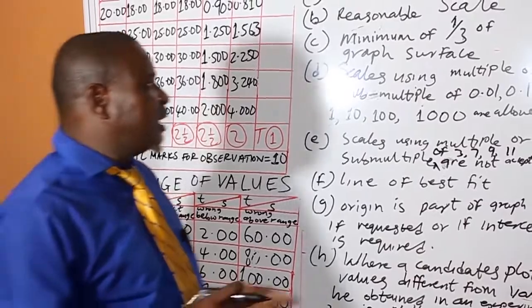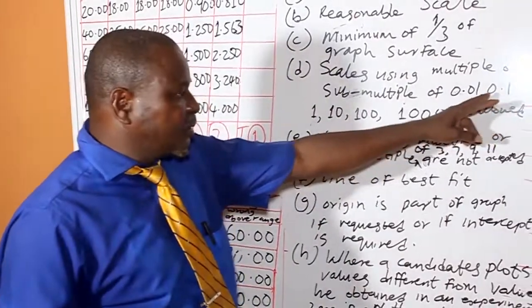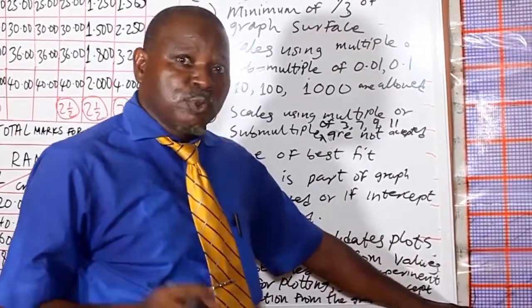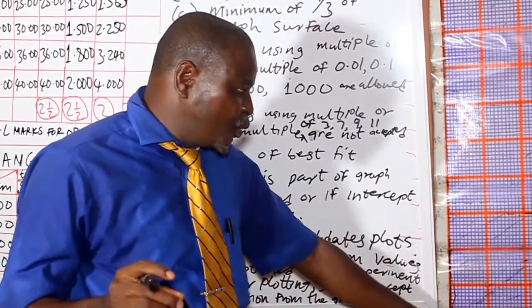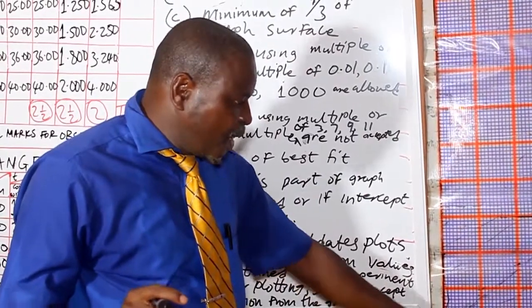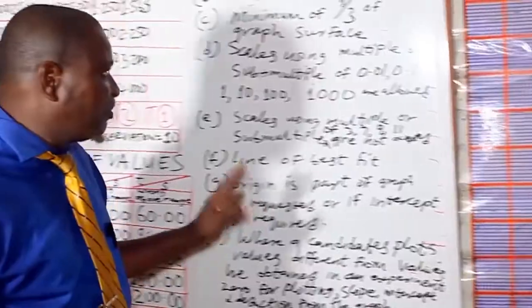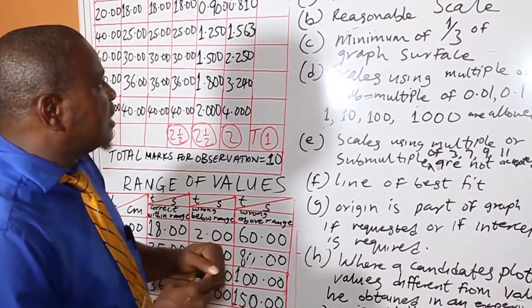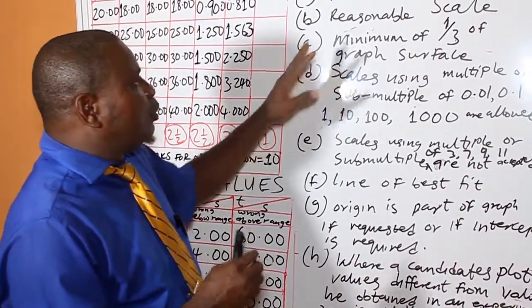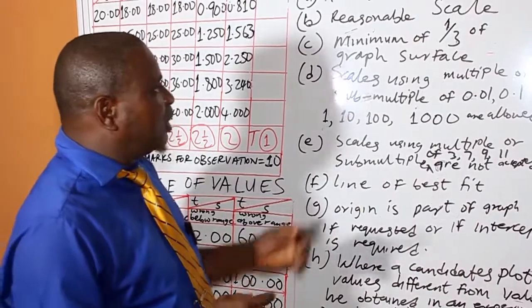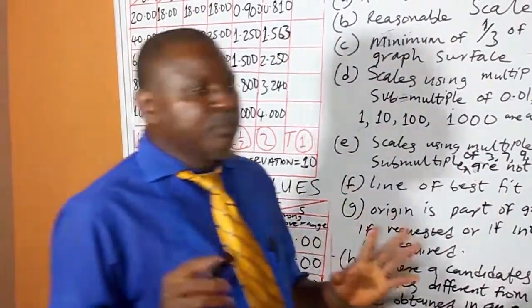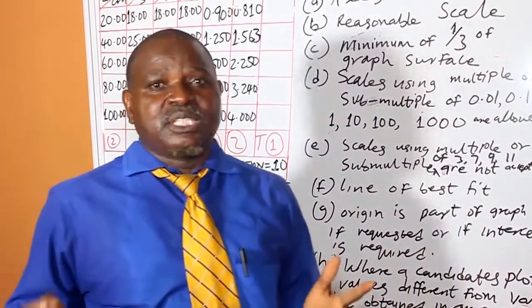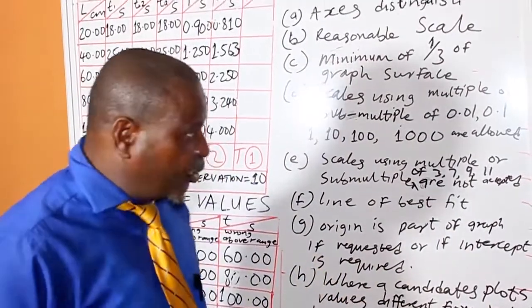The reason is that when you choose this type of scale, it will be easy to define if the point you want to plot falls in between the square. Then you will be able to define it by 10. But to get where you want to plot, your plotting must cover minimum of one-third of the graph surface. How do you determine minimum of one-third of the graph?